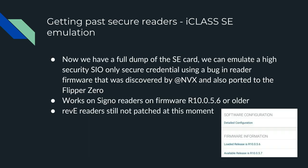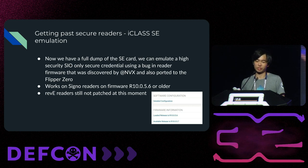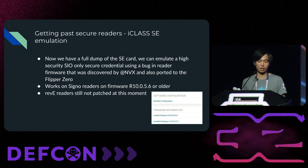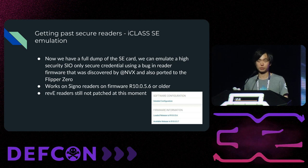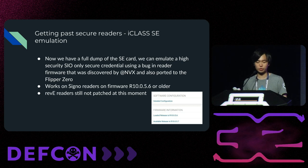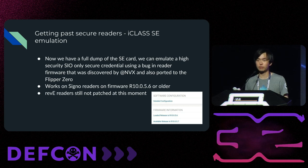Now we're going to get into readers that enforce secure credentials. Since we have a full dump of that SE card, we can emulate a high-security SIO-only secure credential using a bug in reader firmware originally discovered by NVX about a year and a half ago, and ported to the Flipper Zero by editing some code. These attacks work on Signal readers running firmware version 10.05.6 or older. Rev-E readers are still not patched at the moment. You can also use Reader Manager to inspect those Signal readers without being close to them and verify what firmware they are running.